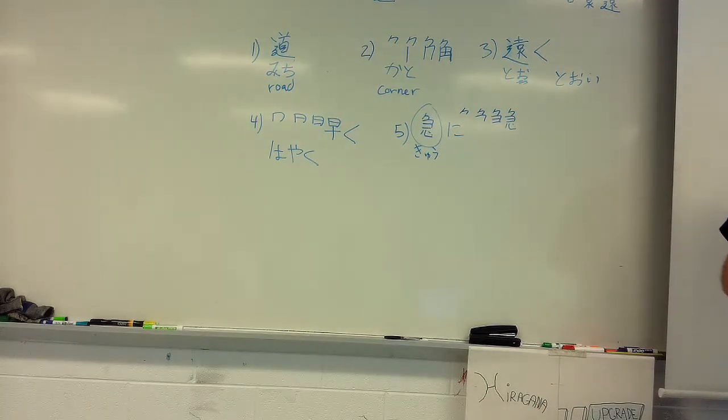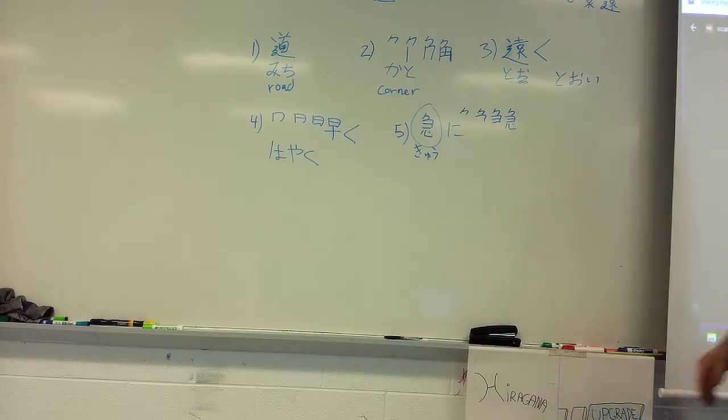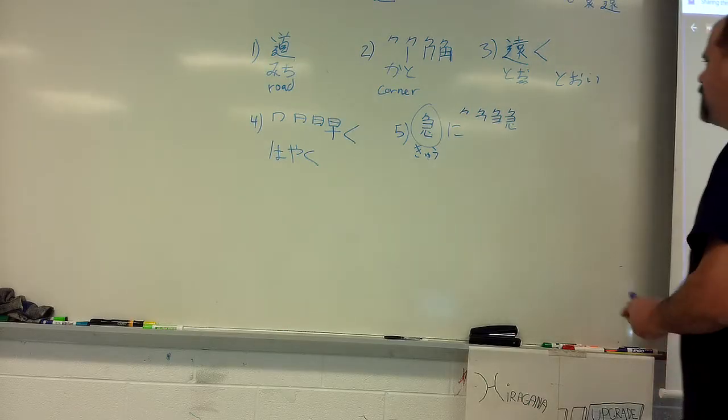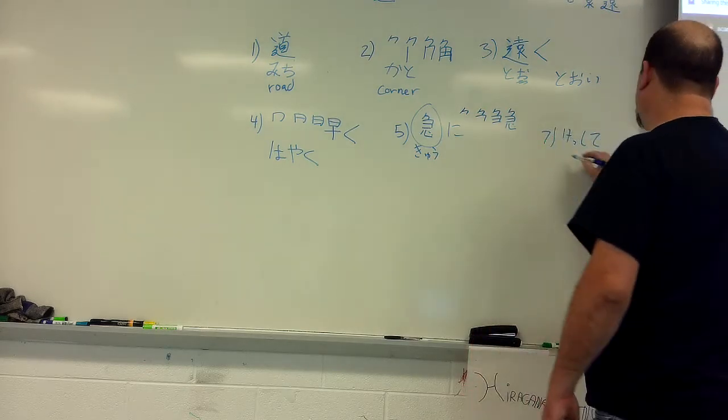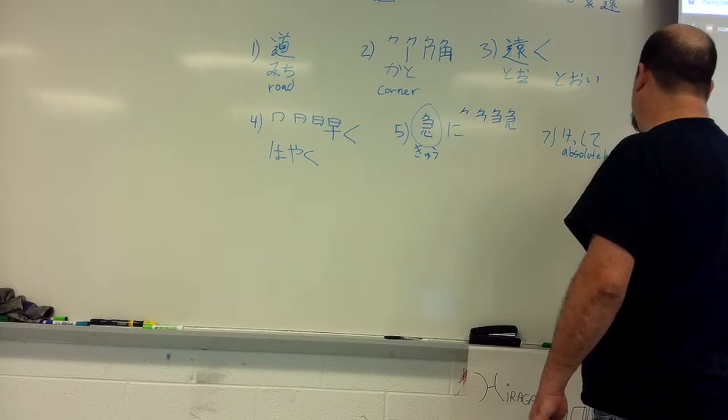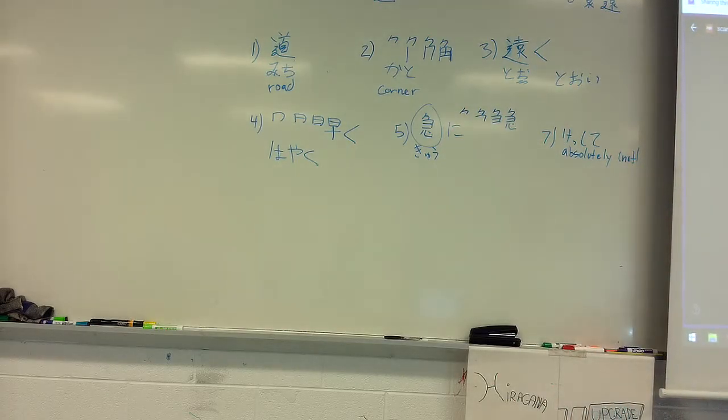And then six is o. So like whenever you're going through something, because it's an action verb and you're passing through it, you use o for that. And then... Kyu shite... Kyu shite means like absolutely. And it's usually used as absolutely not. It's almost always used as a negative.